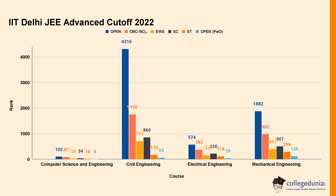For Electrical Engineering at IIT Madras in 2022, the cut-off rank was 574 for Open category, 383 for OBC-NCL, 153 for EWS, and 220 for SC. For Mechanical Engineering, cut-off rank was 1882 for Open category, 980 for OBC-NCL, 401 for EWS, and 507 for SC.